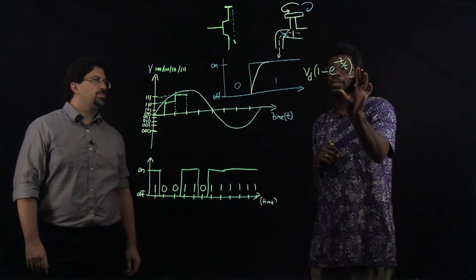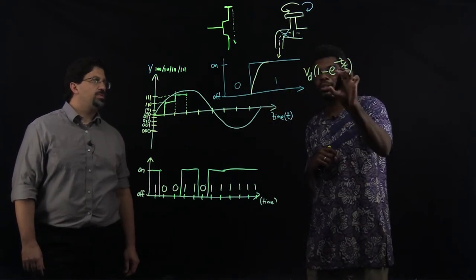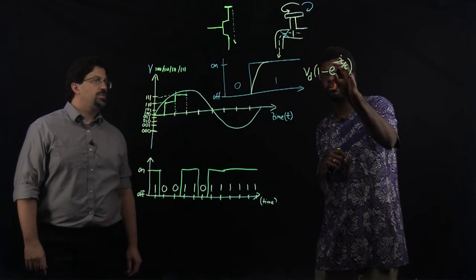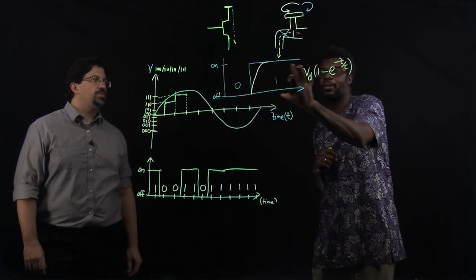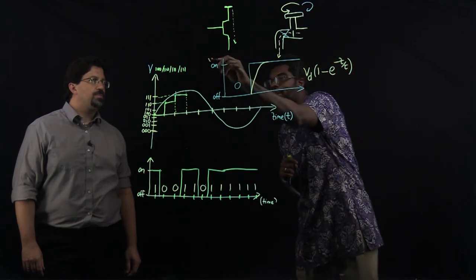And what this equation tells us is that as time increases because of the negative exponent, this part becomes smaller. And we get closer and closer to the value of the VD, which we want, which is the value when it's on.